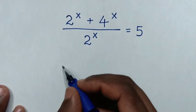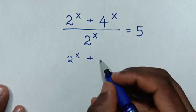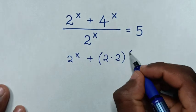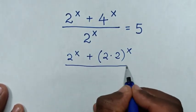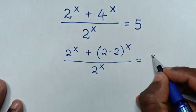So it will be this 2 power of x plus 4 is same as 2 times 2, then bracket power of x, then over this 2 power of x is equal to 5.